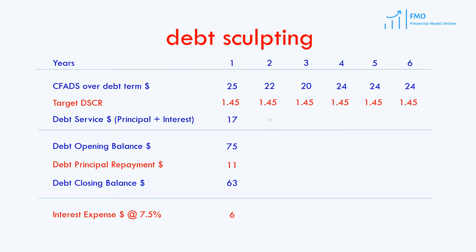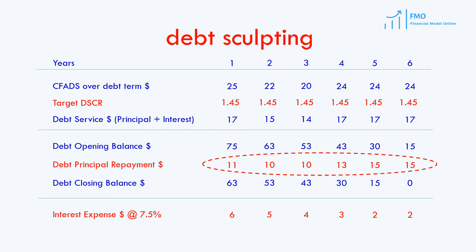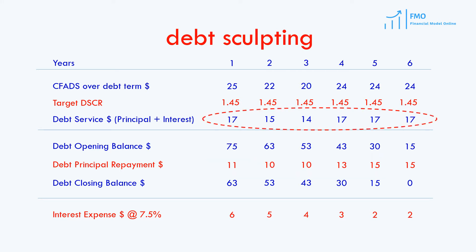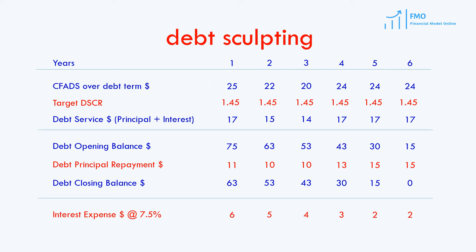We repeat this exercise until we fully repay the debt and our debt closing balance is equal to 0. Now you can see that the variation in our debt principal repayment and debt service follows the variations in our cash flows available for debt service. When our cash flow is high, our debt service is high. And when our cash flow is low, our debt service is low. We will work on the debt sculpting in our model in the next lesson, and see if that will resolve the issue that we have with the current DSCR.